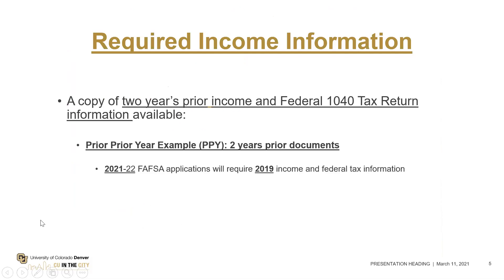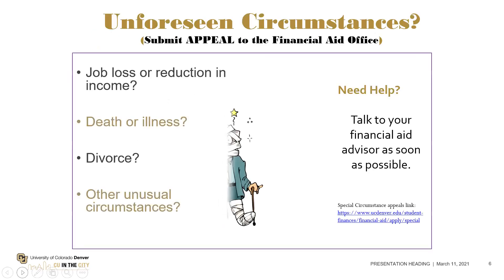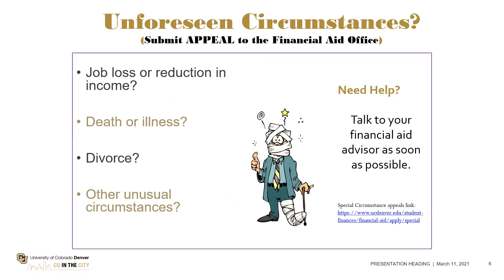The 2019 tax information is required for the 2021-22 FAFSA. A lot has happened since 2019 with COVID — sickness and death have plagued our country, and many changes have happened in households. You still have to put your 2019 information on the FAFSA application, receive your official award notice, and then appeal to the financial aid office letting them know about special circumstances. They can adjust the information, but you do have to originally submit the required 2019 tax information.